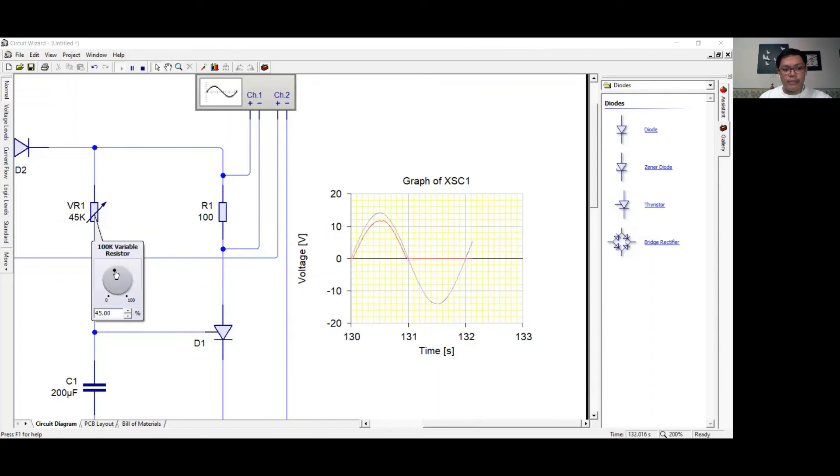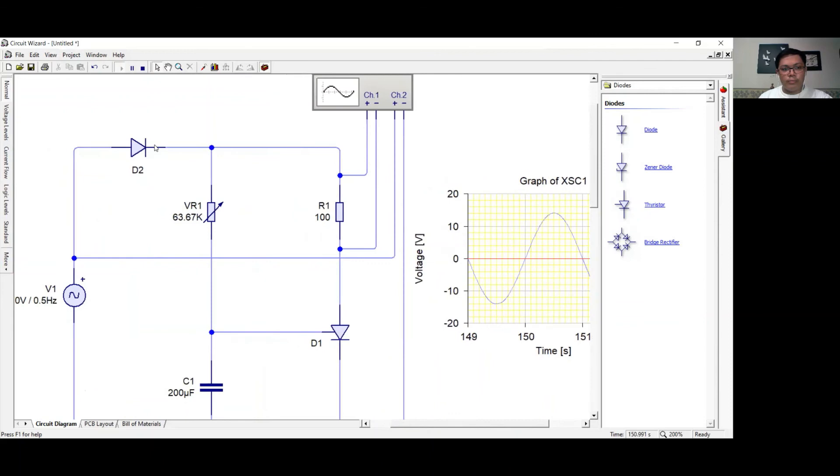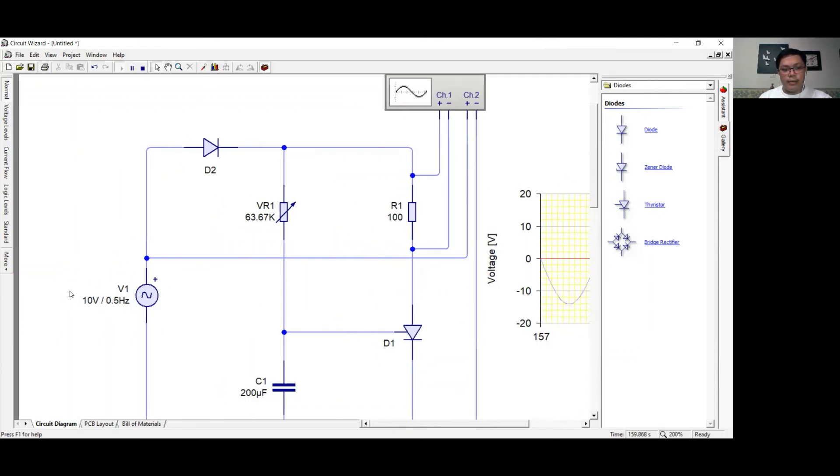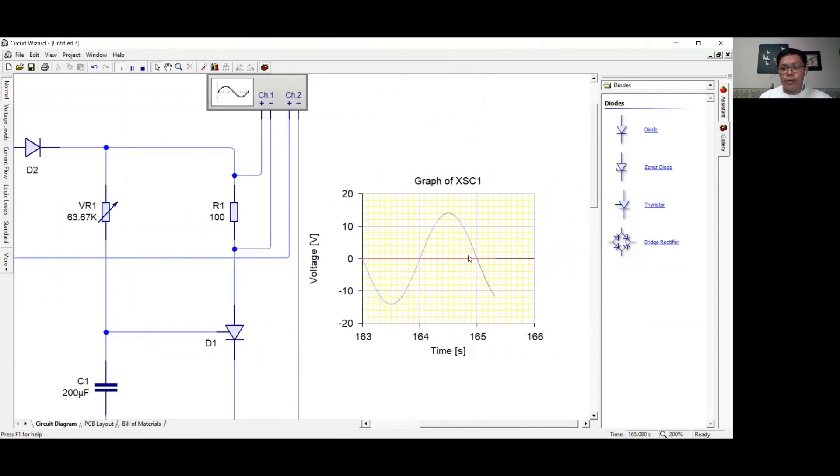If I increase this to 56%, there is a delay in the firing angle. However, if I increase this, the minimum supply voltage needed to turn on the SCR would be greater than the peak amplitude of the AC supply voltage. As such, there will be no firing angle present, and the output waveform is at 0.